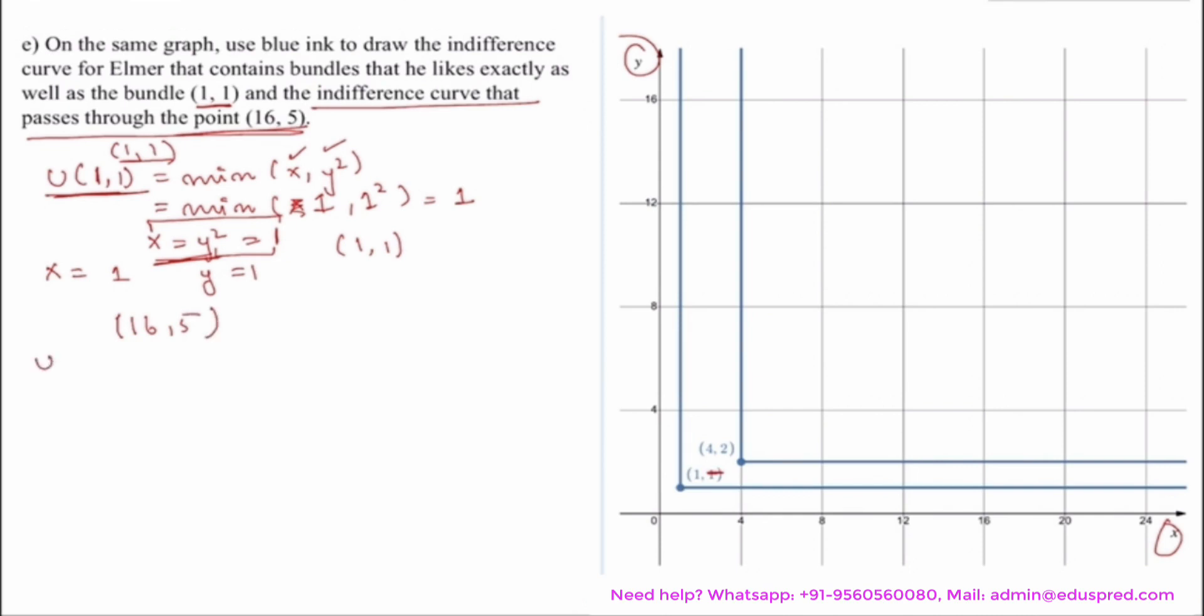The utility at (16,5) now becomes minimum of 16, 5 squared which is equal to minimum of 16 and 25 which is clearly 16. Now, again the intersection here or the kink point would be where your x is equal to y squared is equal to 16. So you have x is 16 and y squared is taking a value of 16. This implies y would be taking a value of 4.